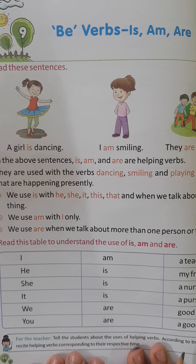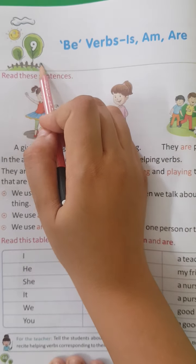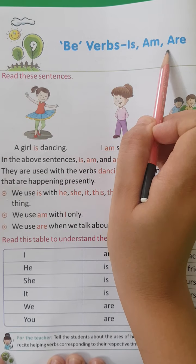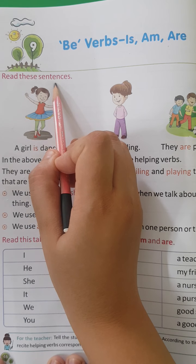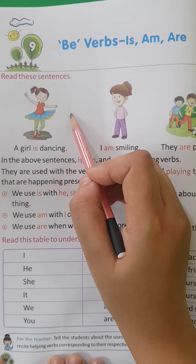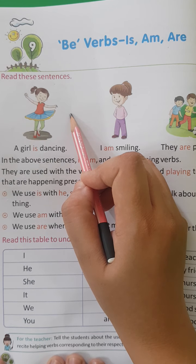In this video we will do the grammar work. So open your grammar class books and open page number 46, chapter number 9 — be verbs, is and are. You also learnt about the use of is and are in your previous class, so I think it's very easy for you. You know very well where we use is, where we use am, and where we use are.